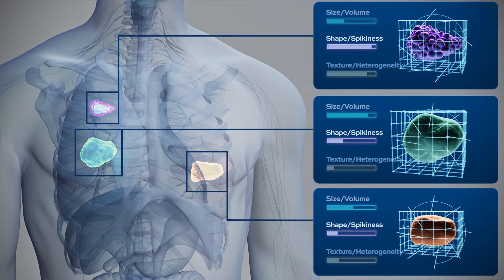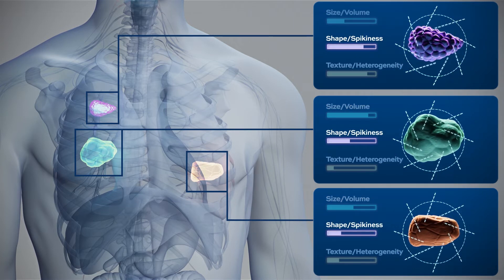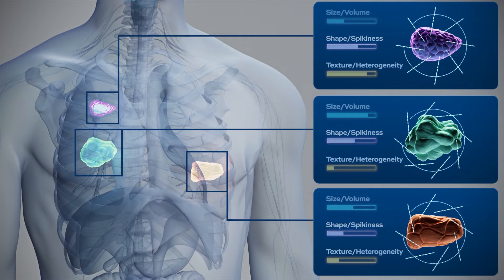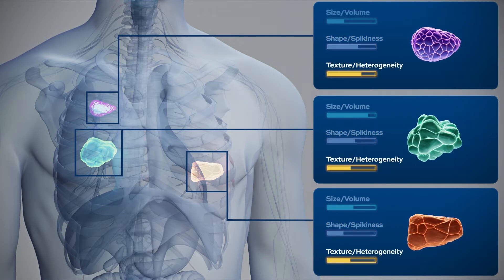The 3D tumour composition of every detectable lesion is quantified over three feature groups – size, shape and texture.